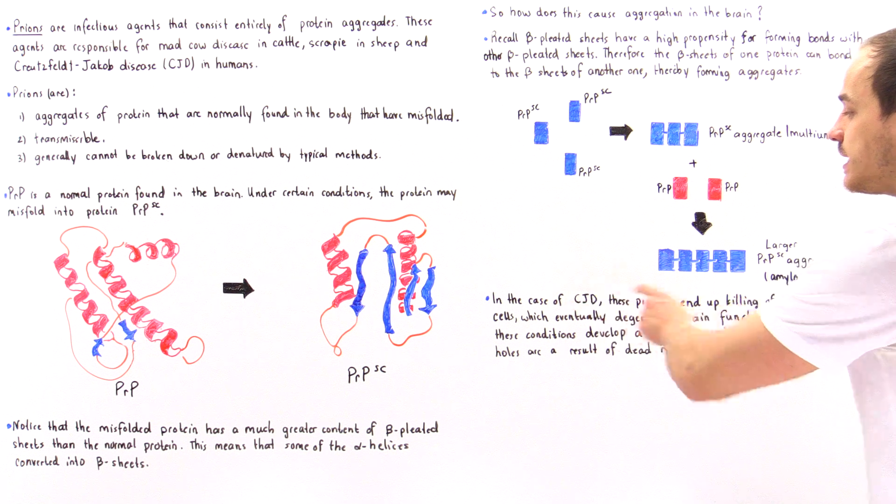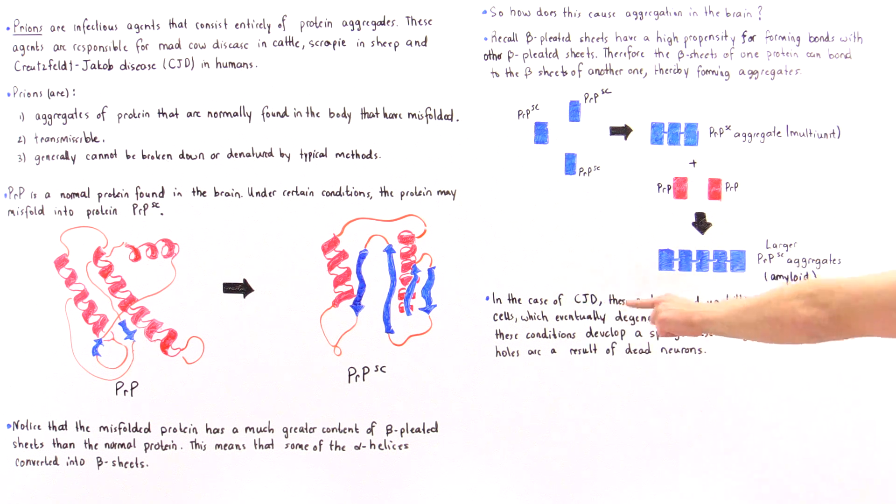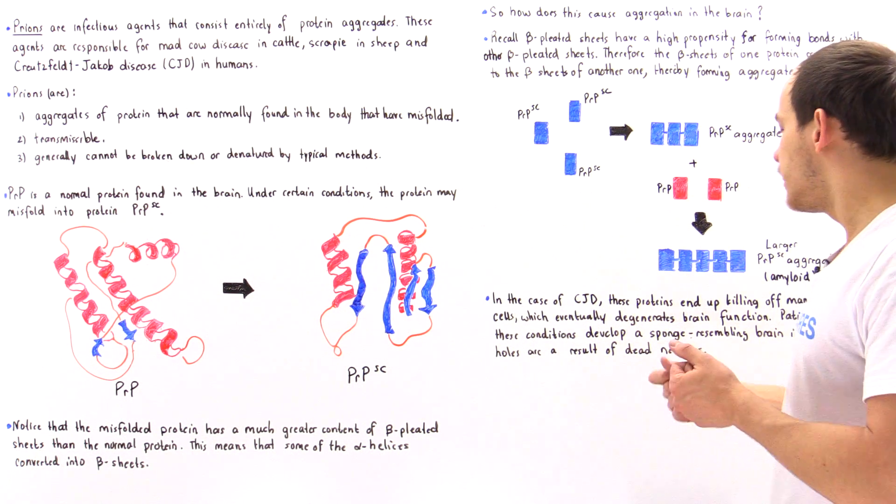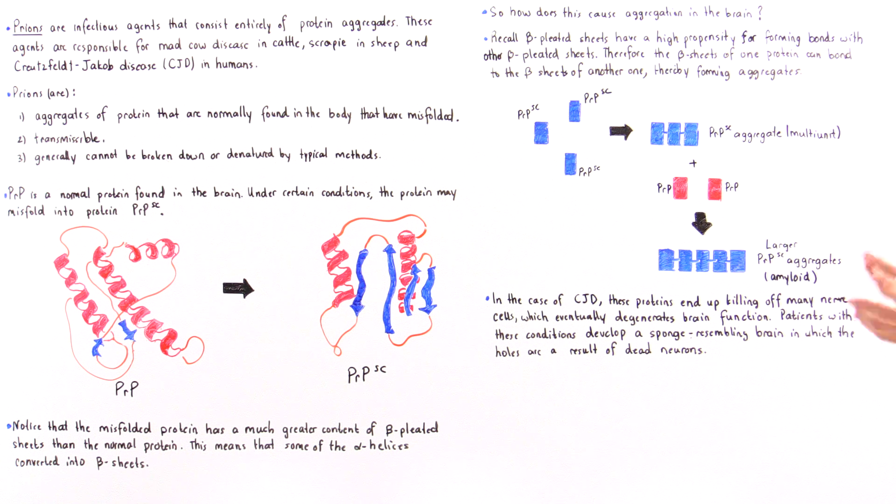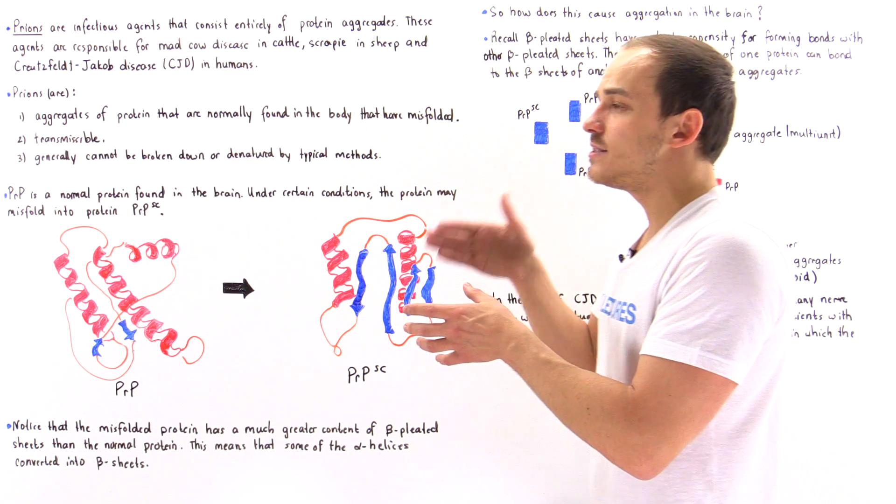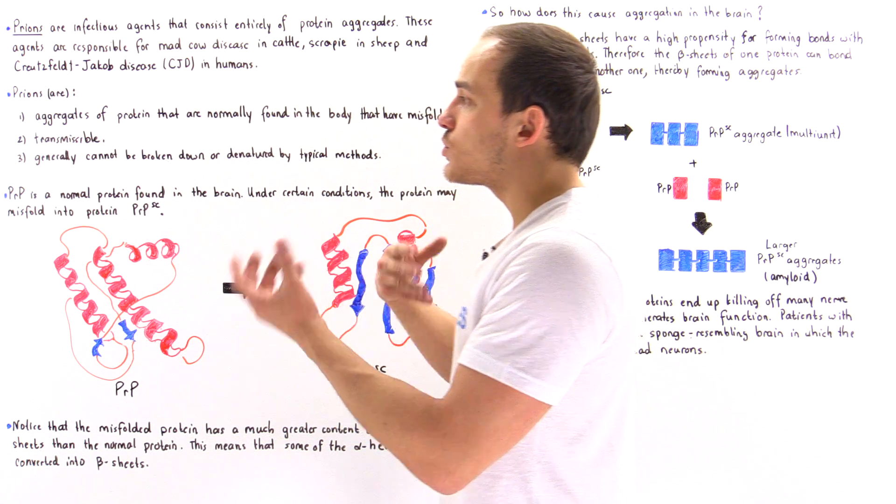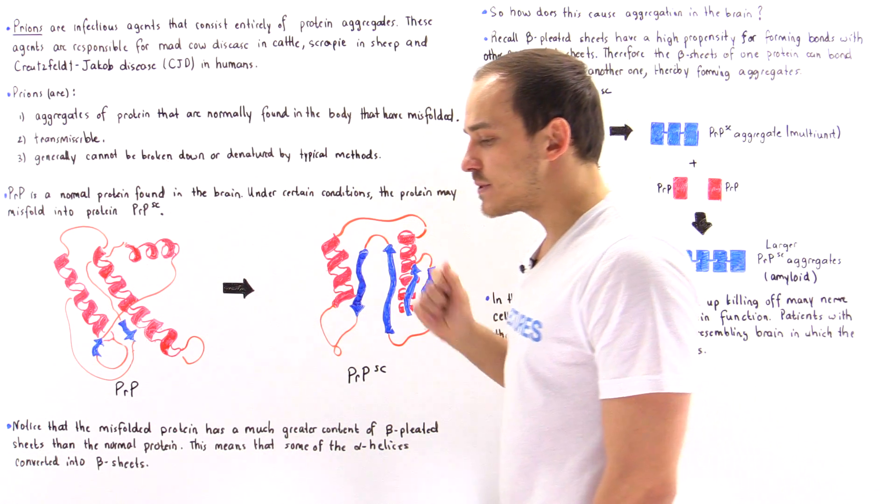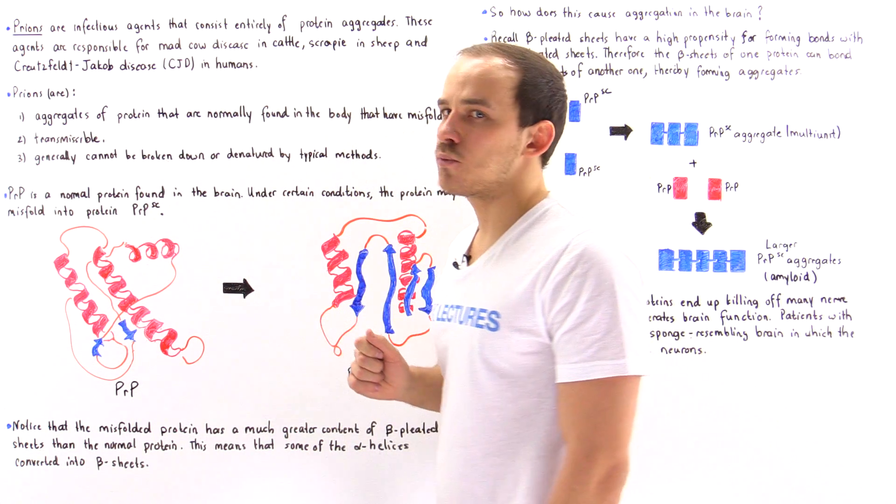In the case of CJD, these proteins end up killing off many of the nerve cells, which eventually degenerates the mental capability and brain function of that particular individual. Patients with these conditions develop a sponge-like brain that contains many holes, which come from the fact that these aggregate molecules kill off different types of nerve cells inside our brain.